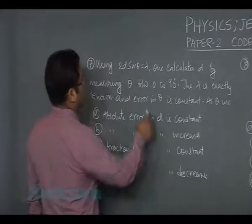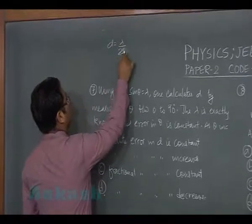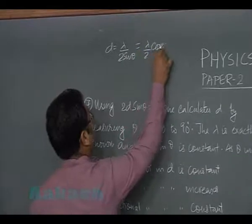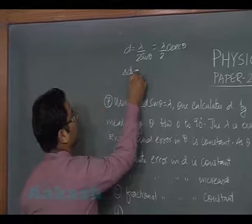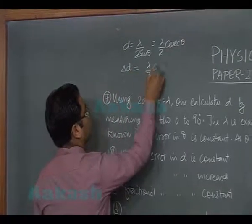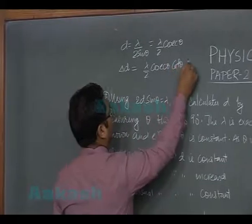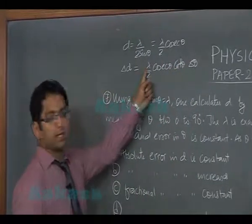First of all, d = λ/(2 sin θ), that's λ/2 cosec θ. Absolute error Δd = λ/2 cosec θ cot θ Δθ. I won't be writing the negative sign because Δd has been termed as the absolute error.